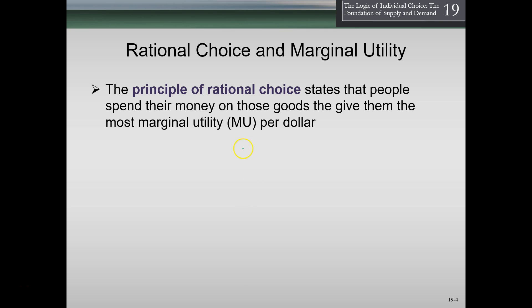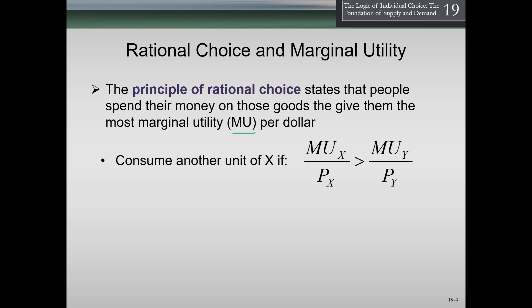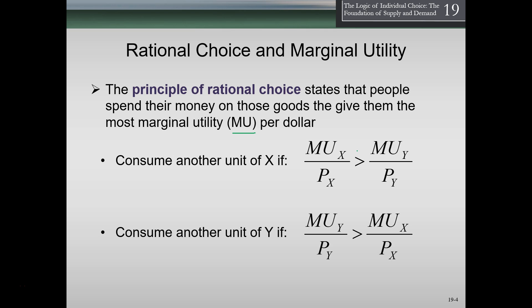We're going to put this into an equation. Assuming we have two goods we could spend our money on — x and y — we're going to consume another unit of x if the marginal utility of x per dollar is greater than the marginal utility of y per dollar. If the marginal utility per dollar of y is greater than that of x, then of course we would purchase y.